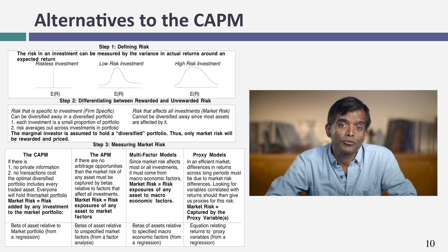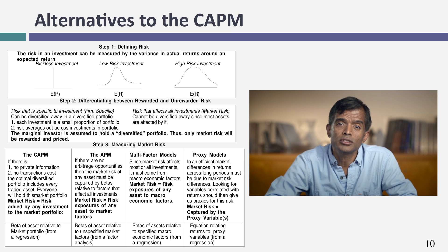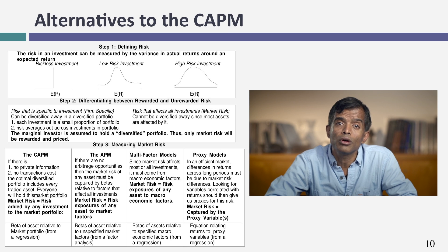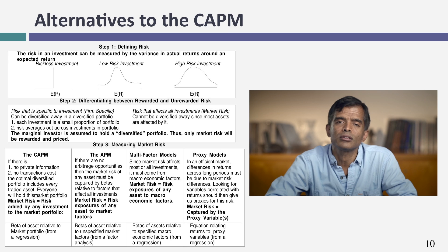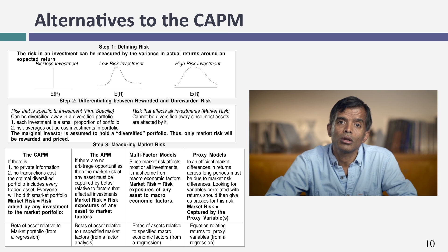For perhaps 14 or 15 years, CAPM was the only model in town. In 1978, Steve Ross at Yale asked why we try to measure all market risk in one beta. He proposed allowing multiple sources of market risk, with a separate beta for each. He took stock price data, let the computer search for common patterns, and it returned five factors — that's called an arbitrage pricing model. Unfortunately, it doesn't have much intuitive feel because those factors remain unspecified.